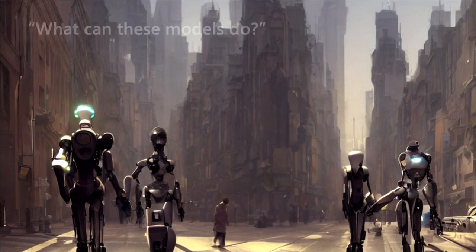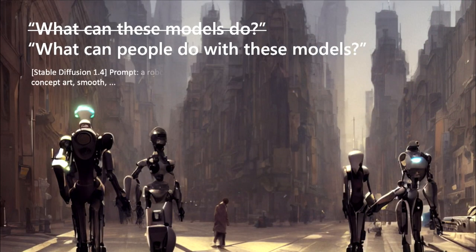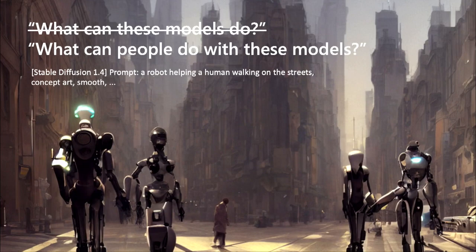This image shows someone from my team trying to prompt Stable Diffusion to show a robot helping a human walking on the streets. The outcome is beautiful, but ironically the robots are holding each other's hands and the poor human is walking by himself — which really reflects the state of how we evaluate these systems.